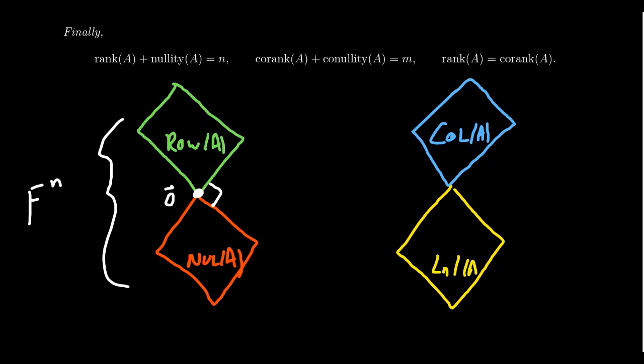And then there's also the left null space. These two vector spaces are likewise orthogonal complements to each other. They meet at a right angle.